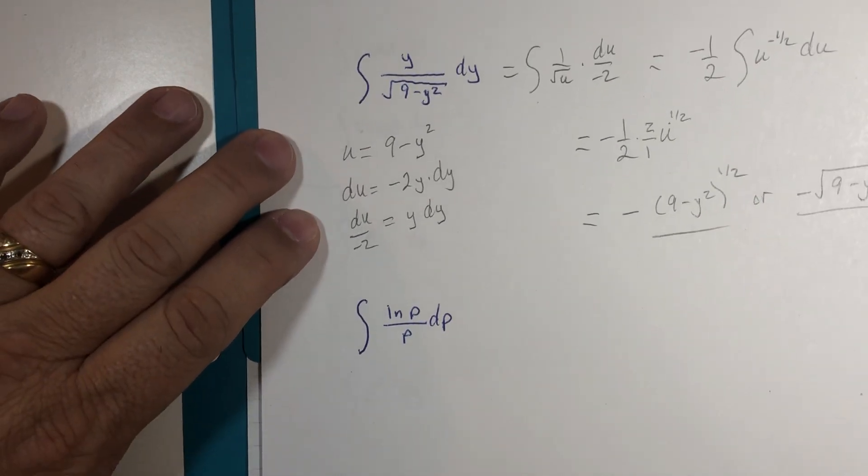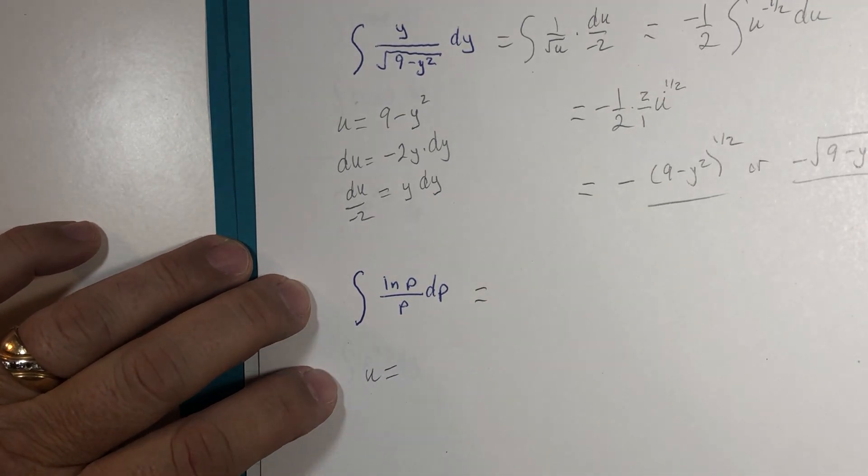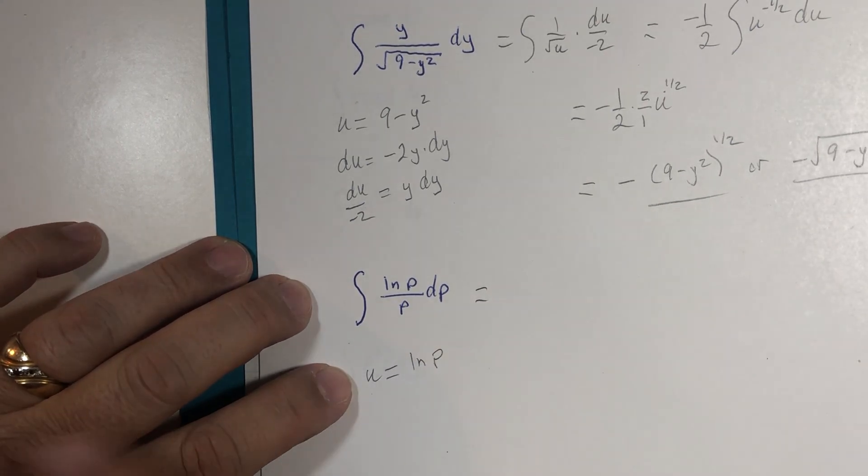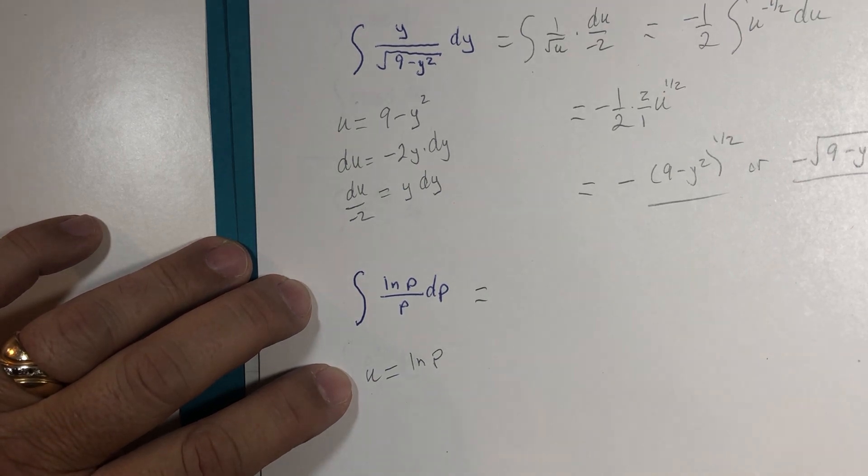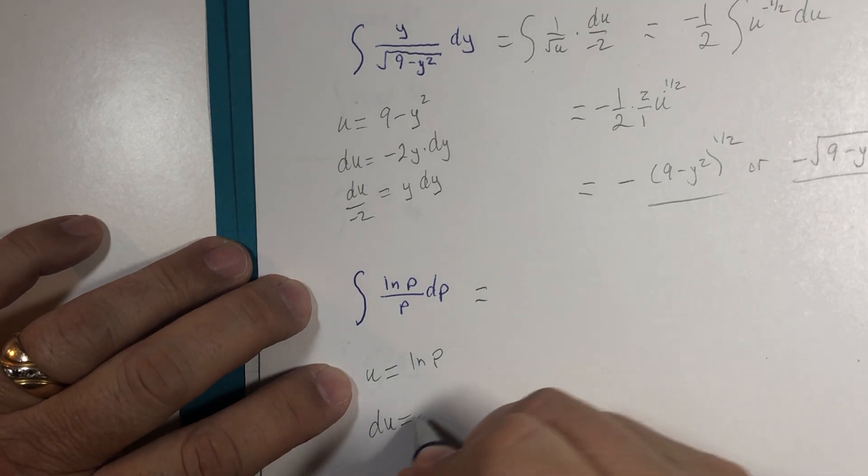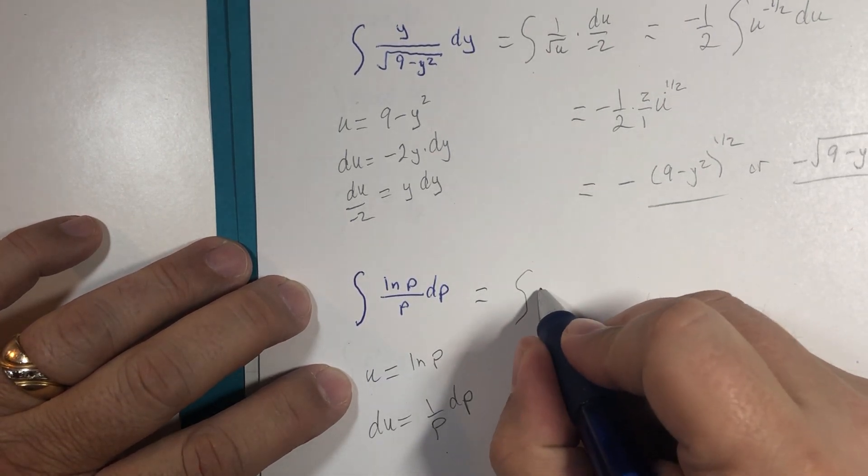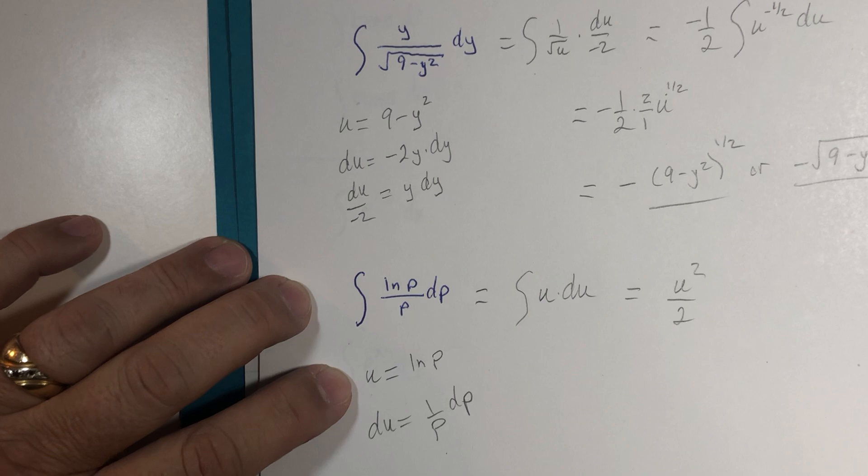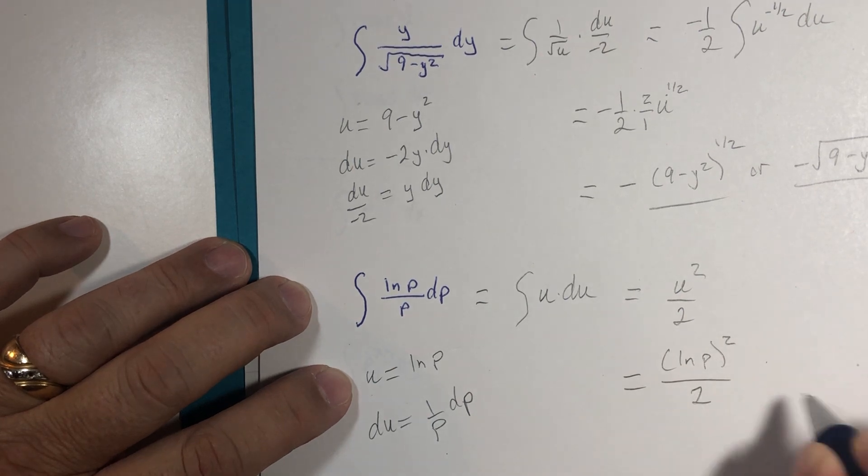One last little one of u substitution and then we get closer to the main event. What is u? Well u is natural log of p. It's automatically a suspect because we don't have a direct integration formula without using integration by parts or other interesting techniques. Du is 1 over p dp and we have that exactly, so we are now integrating u du, which is u squared divided by 2 and a constant. And what is u? Natural log of p, so that's quantity squared divided by 2 and a constant.